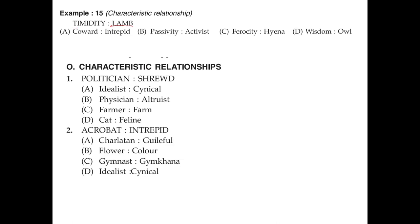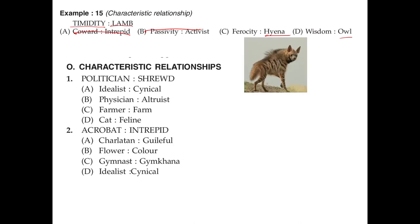Characteristic relationships involve qualities of a subject. Lambs are known for being timid — timid means weak or scared. We're looking for an animal on the right side. We have hyena and owl. A hyena is an animal that attacks in groups and is known for ferocity — they're aggressive, not scared. So we describe the animal's characteristic here — hyena and ferocity is the right answer. An owl is not necessarily known for intelligence or wisdom in this context.